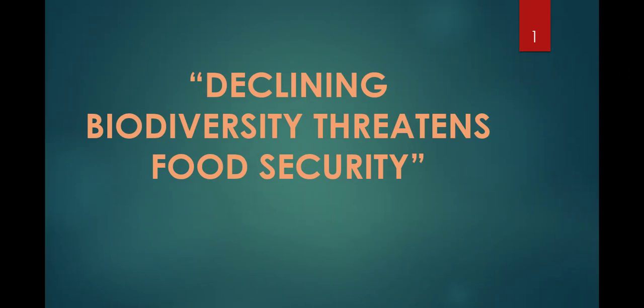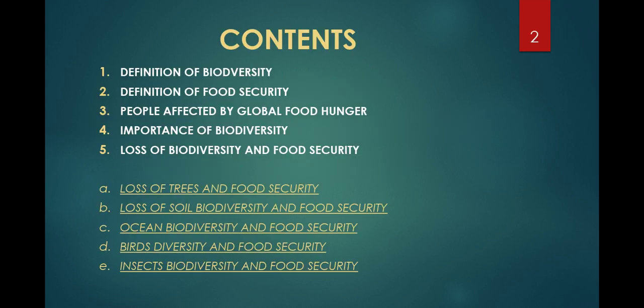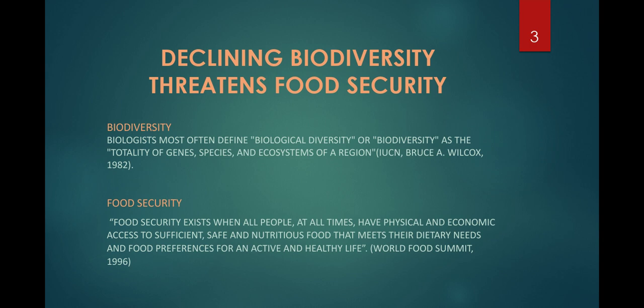Hi everyone, today we will be discussing how declining biodiversity threatens food security. The contents include: definition of biodiversity, definition of food security, people affected by global food hunger, importance of biodiversity, loss of biodiversity and food security, with subtopics covering loss of trees, soil biodiversity, ocean biodiversity, birds diversity, and insect biodiversity and food security.